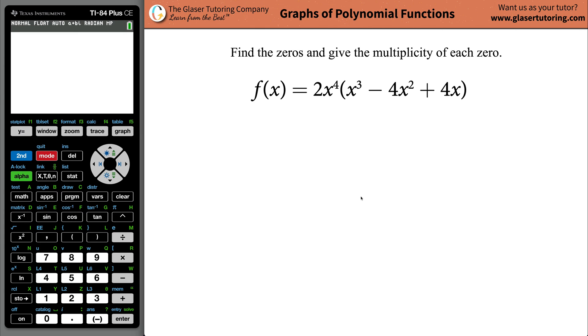Hi-de-ho, it's Andrew and today I would like to teach you how to find the zeros and give the multiplicity of each zero of the following function: 2x raised to the fourth power multiplied now by x cubed minus 4x squared plus 4x. So the first thing is let's find the zeros and the multiplicity will follow.